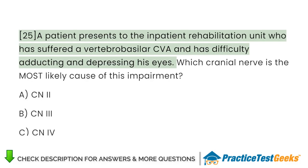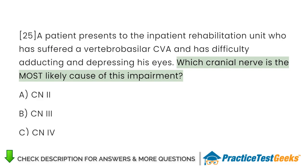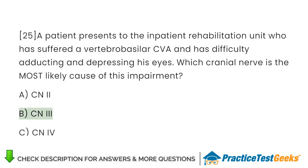A patient presents to the inpatient rehabilitation unit who has suffered a vertebrobasilar CVA and has difficulty adducting and depressing his eyes. Which cranial nerve is the most likely cause of this impairment? A. CN2. B. CN3. C. CN4.